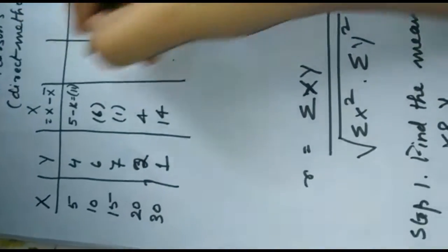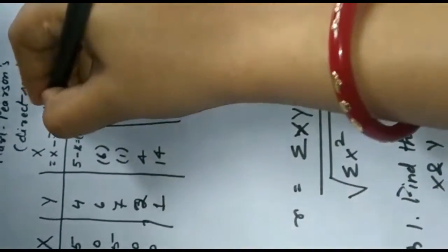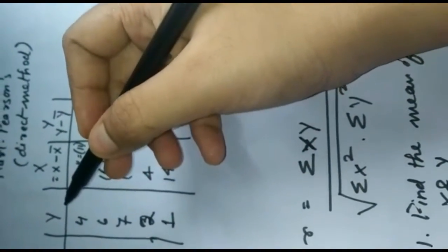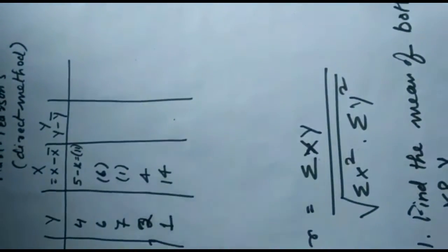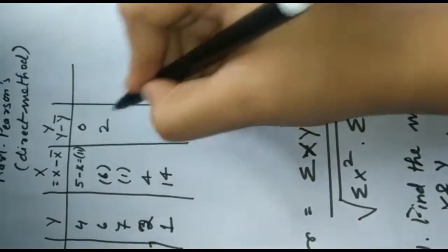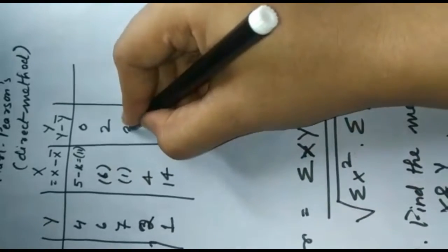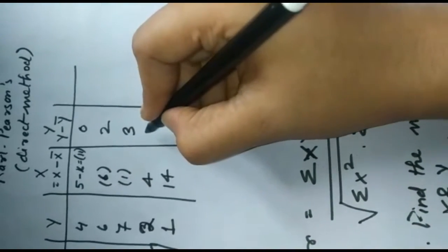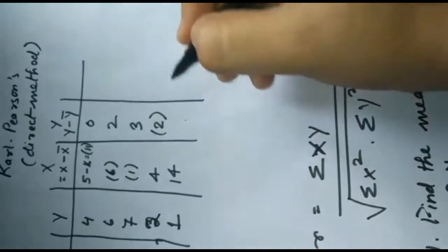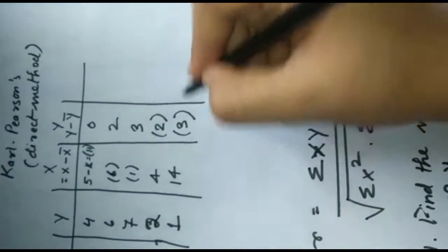In the same way, we will do y minus y bar. 4 minus 4 equals 0, then 6 minus 4 equals 2, 7 minus 4 equals 3, 2 minus 4 equals minus 2, 1 minus 4 equals minus 3.